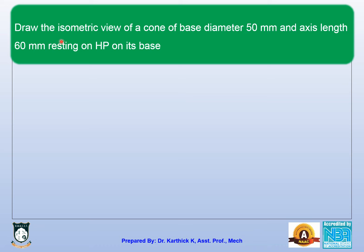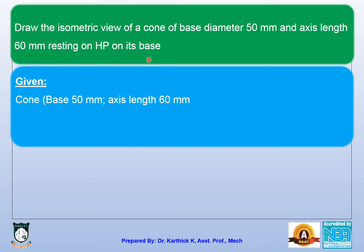The problem given is: draw the isometric view of a cone of base diameter 50 mm and axis length 60 mm resting on HP on its base. The given data: it is a cone, base 50 mm, axis 60 mm, and the base is resting on HP.